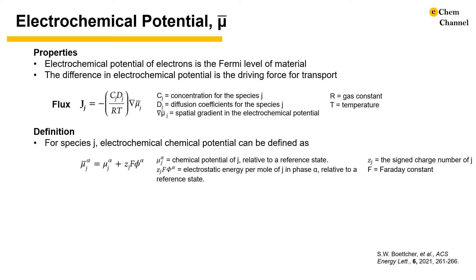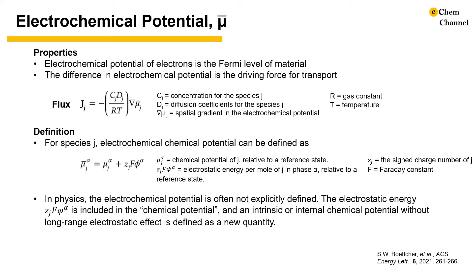For example, in the case of using metal wire as a resistor, metal has a very high concentration of electrons and a large number of electronic states near the Fermi level. When current flows, the chemical potential of electrons can be regarded as invariant. The difference in electrochemical potential we measure is then equivalent to the difference in electric potential. There is a confusion of chemical potential versus electrochemical potential. In physics, the electrochemical potential is usually not explicitly defined. The electrostatic energy term is included in the chemical potential, and an intrinsic or internal chemical potential without long-range electrostatic effects is defined as a new quantity.